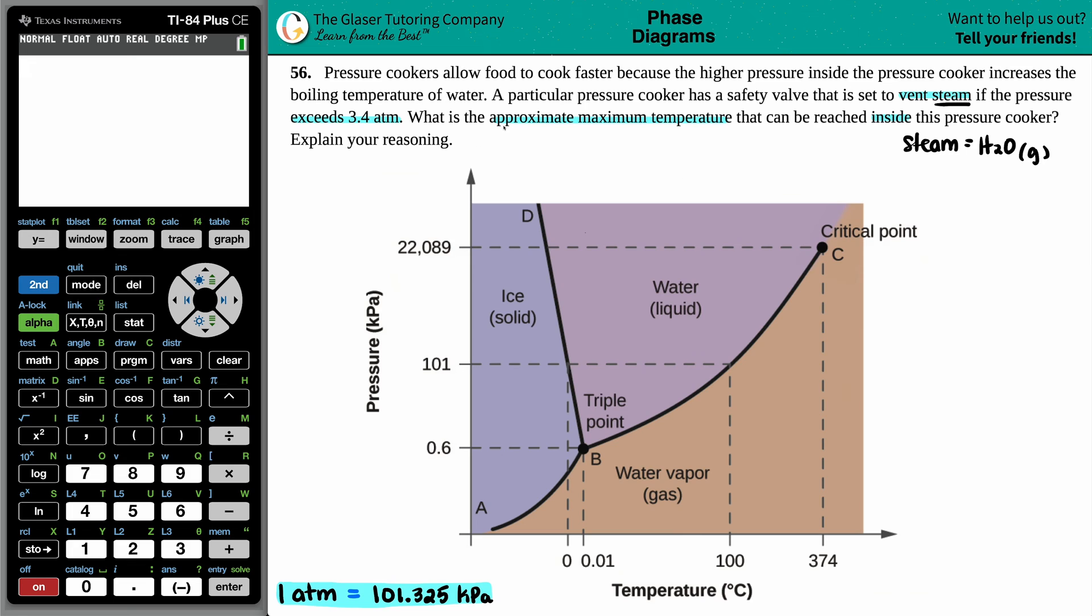Now basically what pressure cookers do is it fast cooks everything because it's increasing that boiling temperature of water in which liquid water will turn into steam. However, if the pressure cooker senses that there's steam being made at the boiling temperature and the liquid water is starting to turn into steam, that will be a safety valve and it will start venting off the steam, and that happens at 3.4 atm.